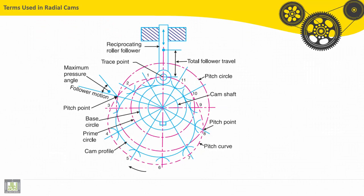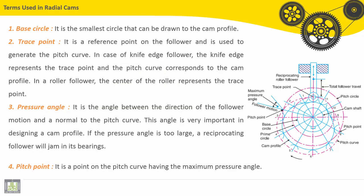We will continue now with terms used in radial cams. Here we have terms used for radial cam. We will start by the base circle. So, we can see the base circle here. This is the base circle. It is the smallest circle that can be drawn to the cam profile.